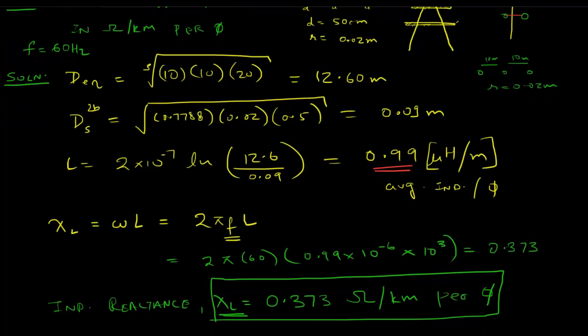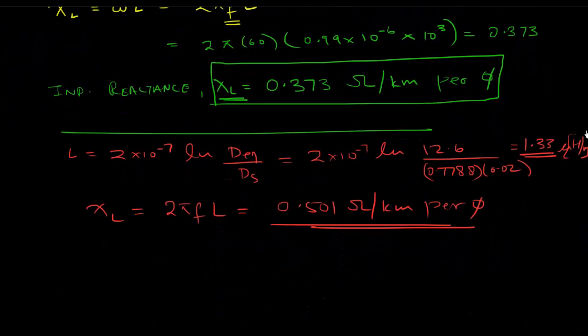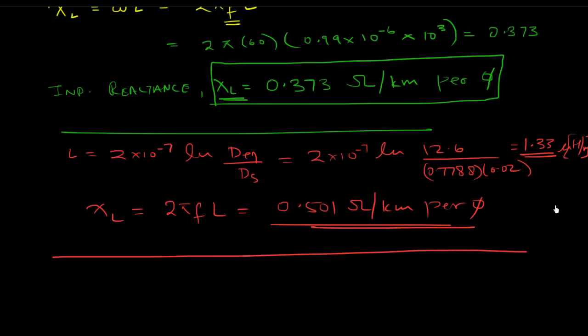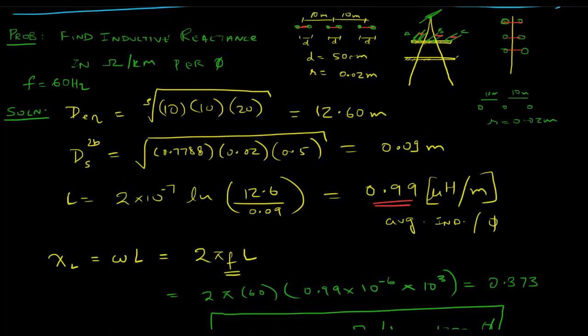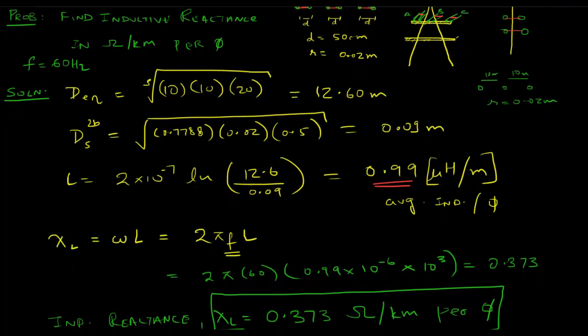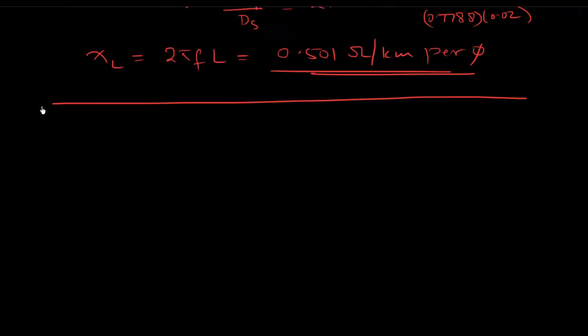Again, you see how we've reduced the XL, the inductive reactance, and the inductance itself by using a bundle situation, by using bundled conductors. That is, as I mentioned in the last video, the biggest advantage of using bundled conductors, apart from the fact that they reduce the corona effect for extra high voltage lines like 200, 230 kV, 400 kV, 500 kV.